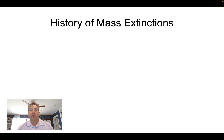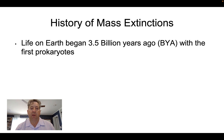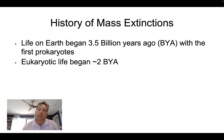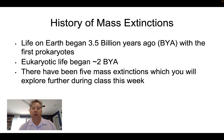In class today you'll explore the history of mass extinctions. Life on Earth began about 3.5 billion years ago with the first prokaryotes — bacteria and archaea, organisms without a nucleus. Eukaryotic life began with single-celled eukaryotes about 2 billion years ago, and multicellular eukaryotes appeared about a billion years after that. During the time multicellular eukaryotes have been on Earth, there have been five documented mass extinctions, and you'll explore what caused each of those.